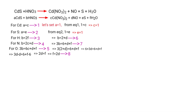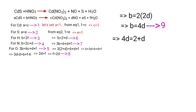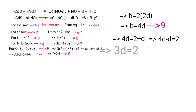Applying equation 8 in equation 3: B = 2·(2D), so B = 4D. Applying equation 9 in equation 6: 4D = 2 + D, so 3D = 2, therefore D = 2/3.